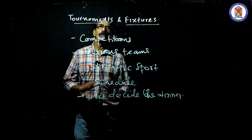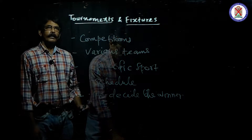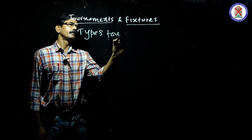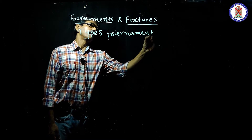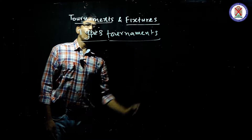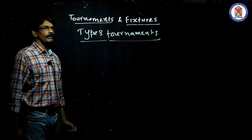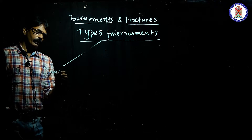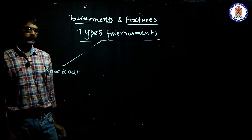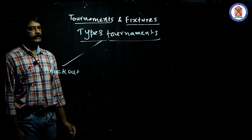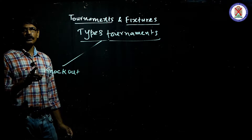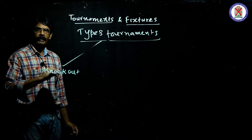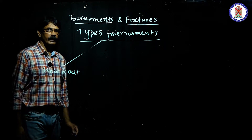Now let me move on to the different types of tournament. We have four major types. The first is knockout tournaments, also called elimination tournaments. Once you lose in the tournament anywhere — maybe in the first round, second round, or third round — you will be knocked out from the tournament then and there.